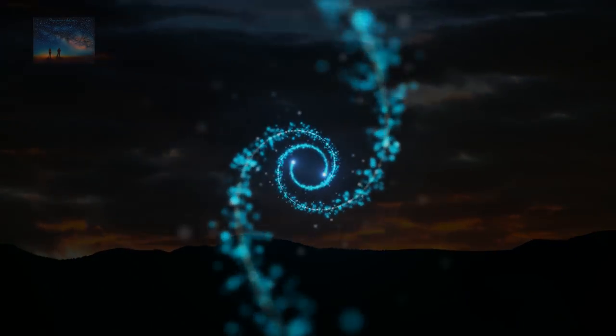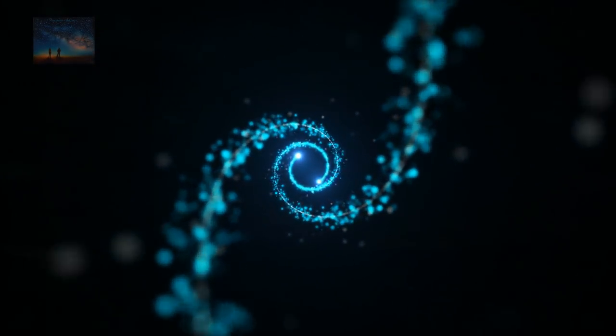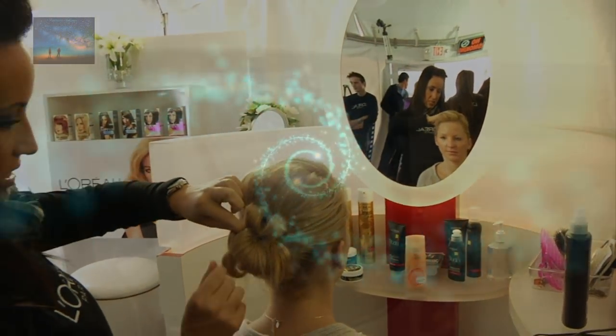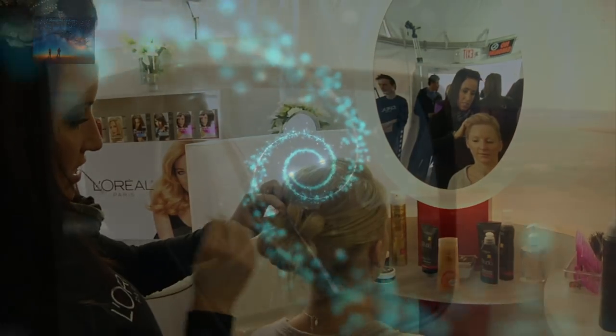Something as simple as a mirror is really a type of Chronovisor. We don't see ourselves in the mirror as we currently are, but as we were just a few millionths of a second before. The time it takes the light to travel from our face to the mirror, reflect off and return to our eyes.